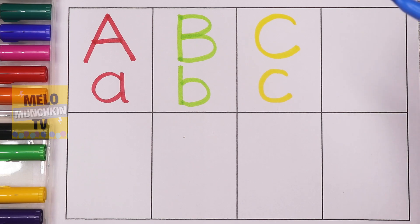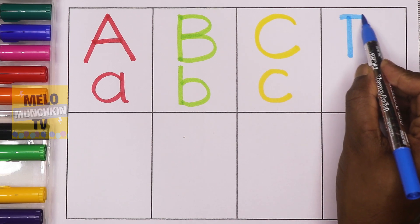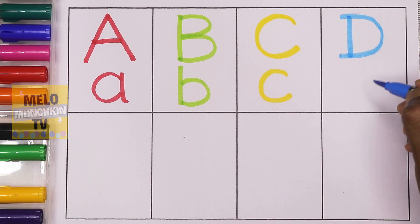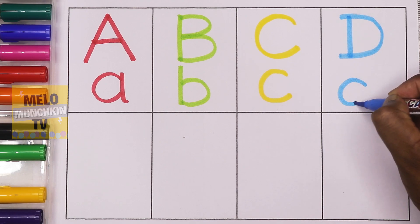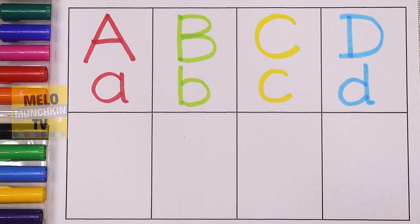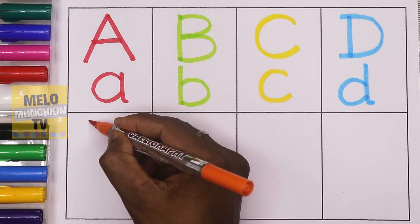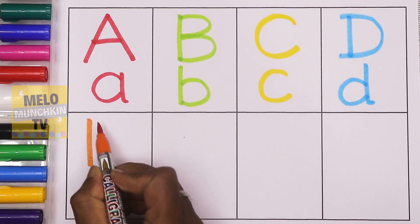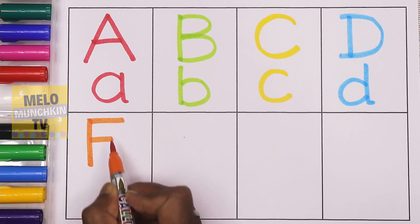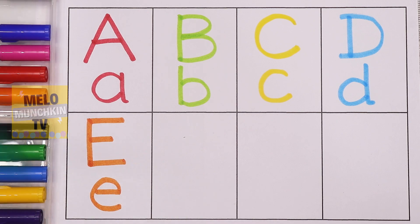And this one is small C. C for cat. Next I'll take blue color to write the letter D. This is capital D. D for dog. And this one is small D. D for dog.